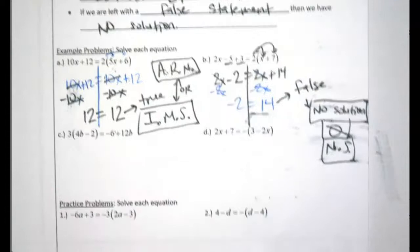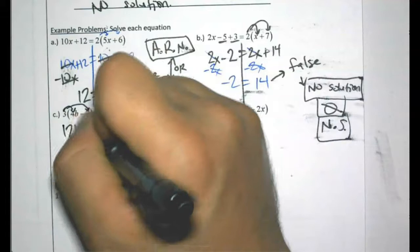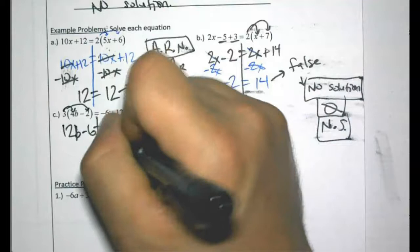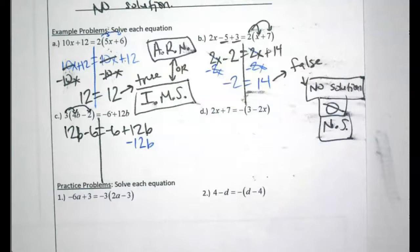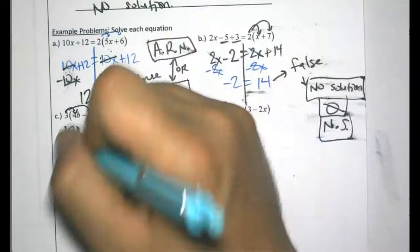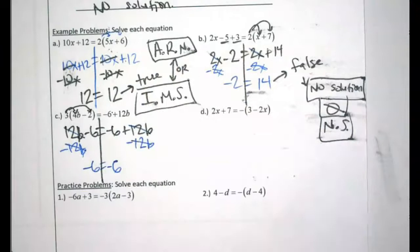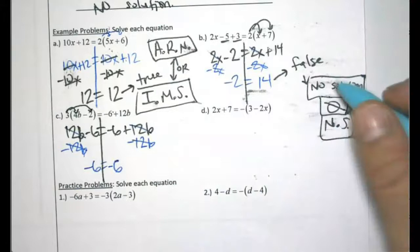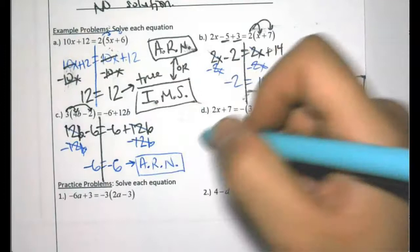Let's keep going. Draw the line — we need to distribute: 3 times 4b is 12b, and 3 times negative 2 is minus 6. On the other side I have negative 6 plus 12b — no distributing or like terms needed. The two sides look very similar. I subtract 12b to move variables to the same side — the variables zero out — and I'm left with negative 6 equals negative 6. Does negative 6 equal negative 6? Yes — so the answer is all real numbers, or infinitely many solutions.